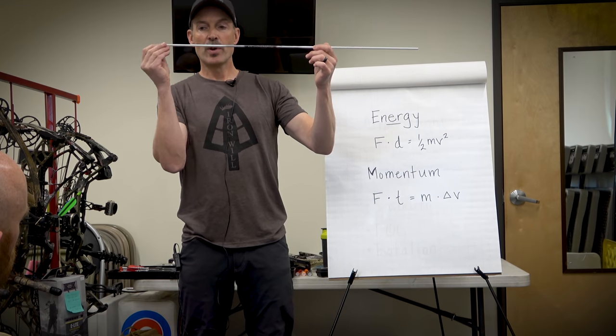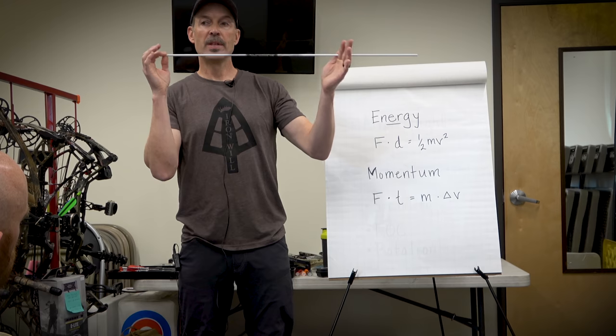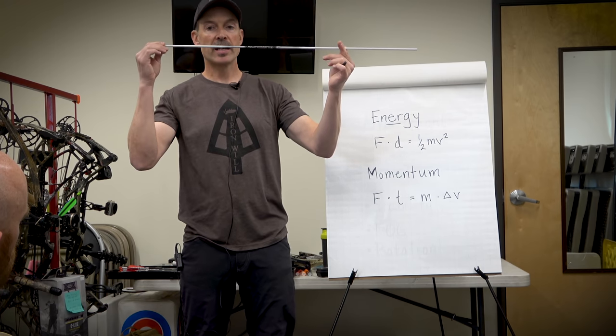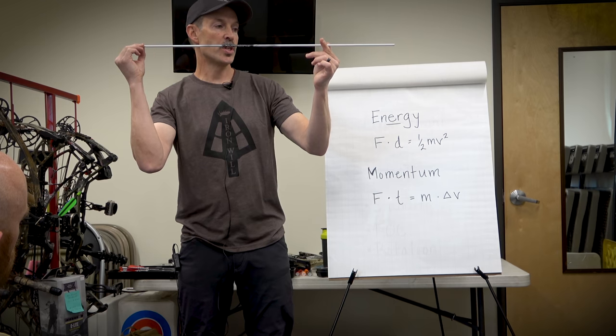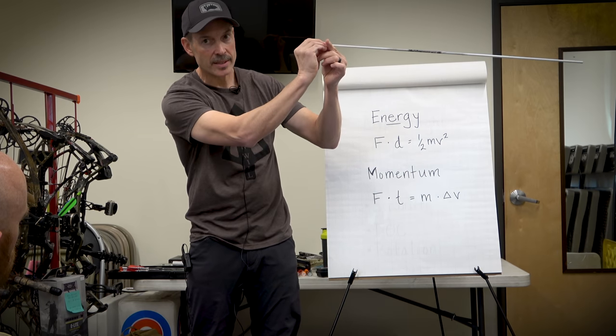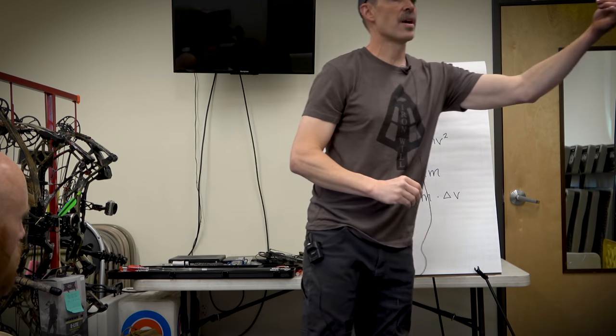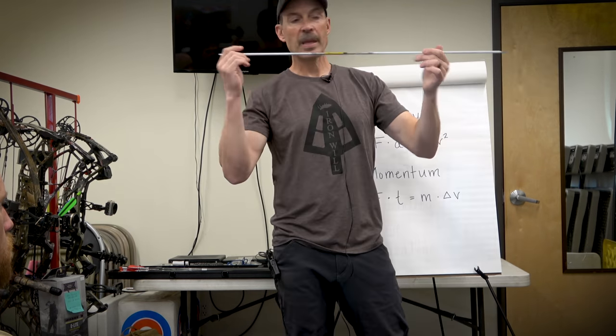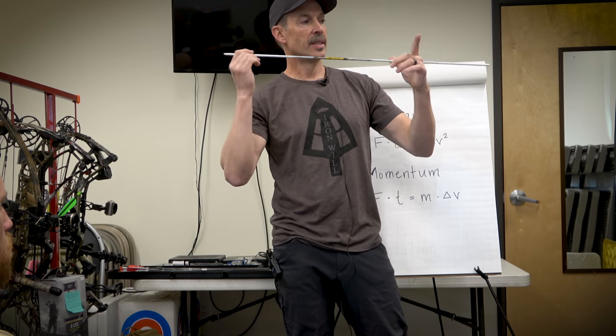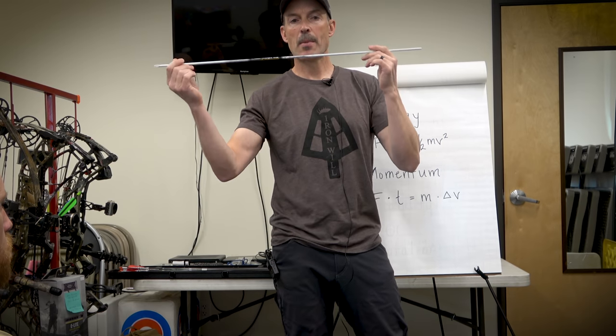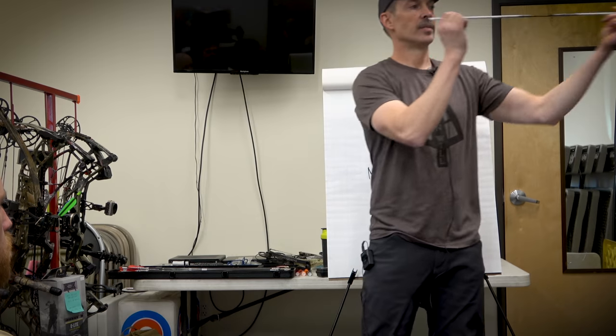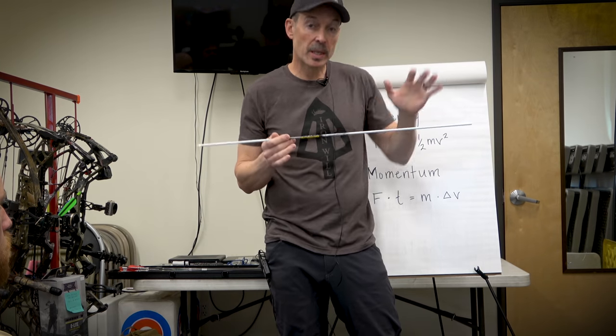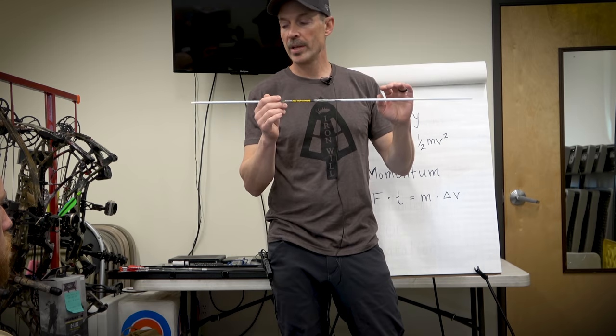Ideally you want that force to be in a straight line. So you want to have your bow tuned so that your nock, your string is pushing your nock straight in line with your rest. So when your arrow's coming off straight, you kind of maximize that momentum that you're going to get in your arrow. If it's not, if it's pushing off, then you're losing some of that momentum and the arrow is going to do some of this. So you've lost some of the energy, some of the momentum you could have had downrange.